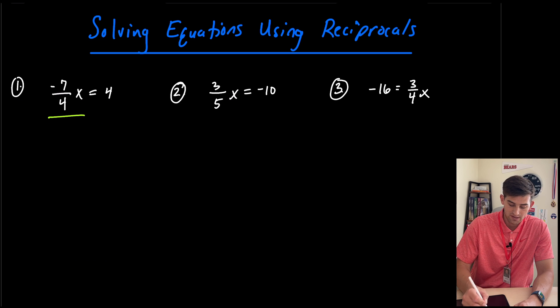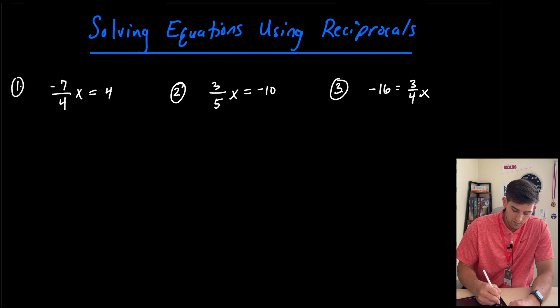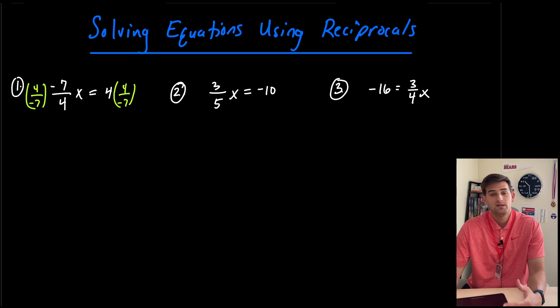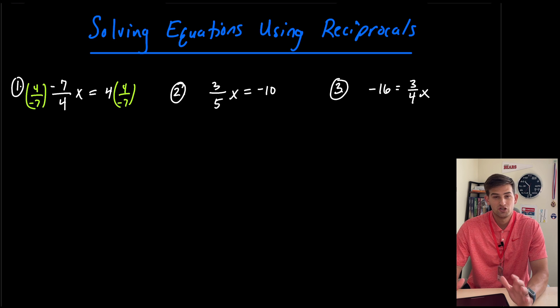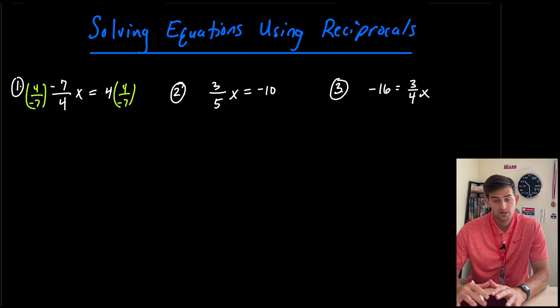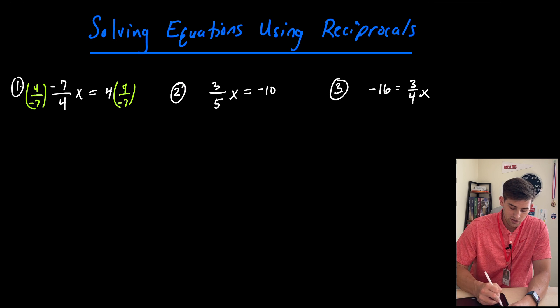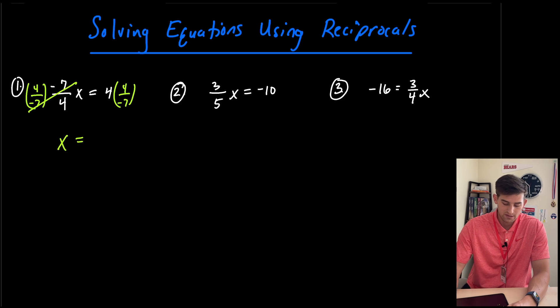So we can go ahead and just multiply at the beginning by the reciprocal. We don't have to go through that process of keep flip change and all that. So I'm going to multiply by four over negative seven on both sides of my equation, because remember we still have to keep the equation balanced. So now when I multiply by reciprocals, just like dividing by the same number, it's going to equal out to one, which is going to cancel out and leave us just with our variable, which in this case is x.